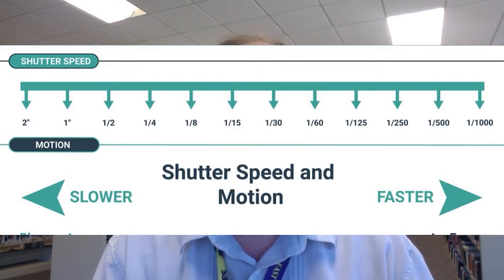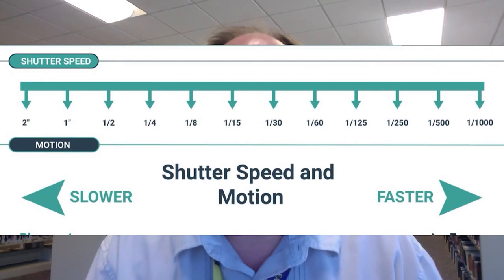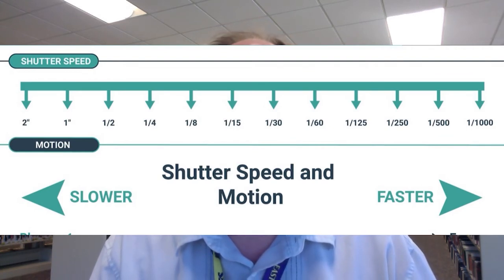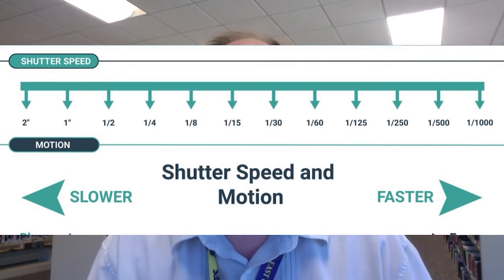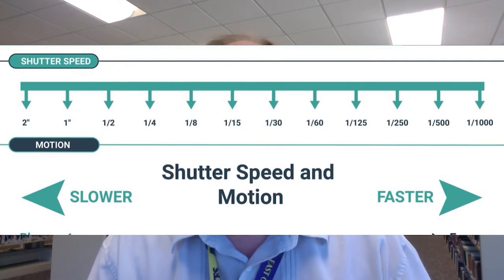The shutter speed settings are measured in fractions of a second. The typical settings, starting with the slowest shutter speed, are: 1/2, 1/4, 1/8, 1/15, 1/30, 1/60, 1/125, 1/250, 1/500, and 1/1000. This may vary from camera to camera. Some cameras will have faster shutter speeds up to 1/8000 of a second, and some may have very slow shutter speed options of one second or longer.